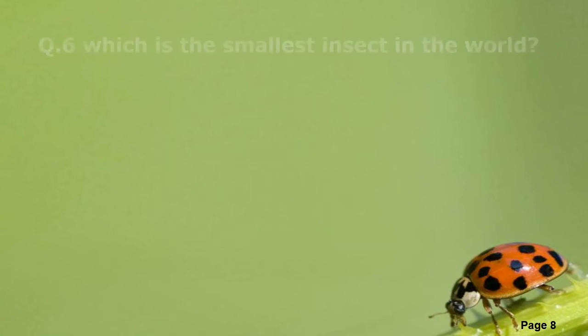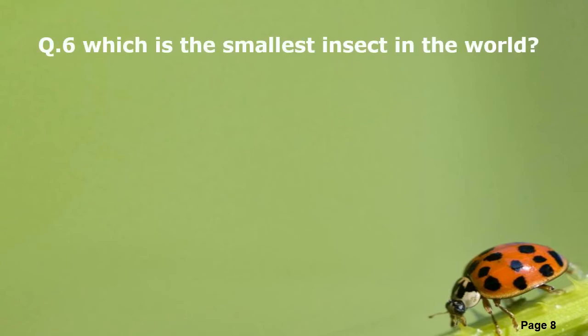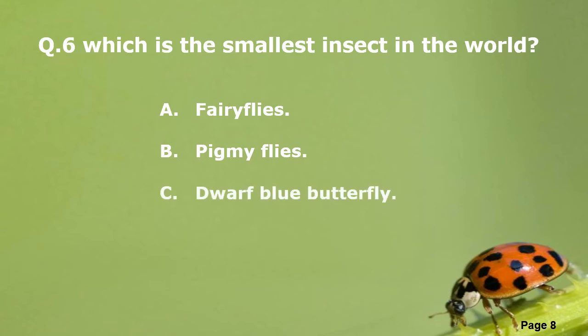Question Number 6. Which is the smallest insect in the world? A: Fairy Flies. B: Pygmy Flies. C: Dwarf Blue Butterfly. D: Robber Flies.